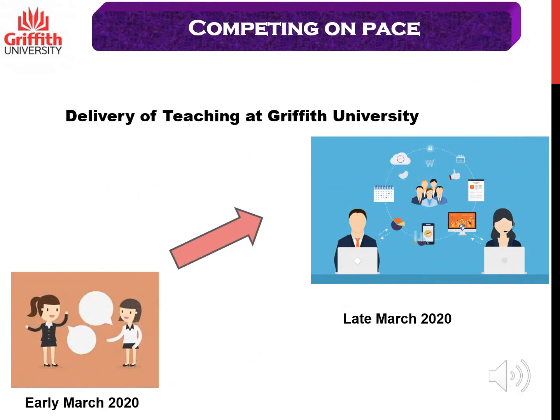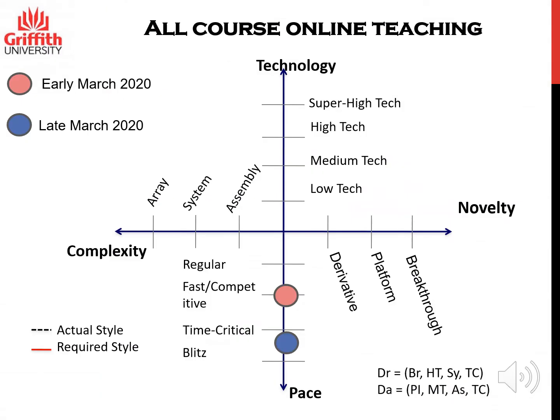The importance of pace in project management can be illustrated using the case of the delivery of teaching at Griffith University in the context of the COVID-19 crisis. Before early March 2020, courses were being delivered in the normal way — some courses online and other courses face-to-face on campus. However, due to the COVID-19 crisis, the university decided that by late March 2020, all courses needed to be migrated to an online basis. This means that organizing course delivery at Griffith University moved from being a fast and competitive project to being a time-critical project.